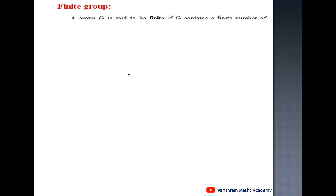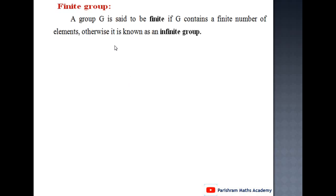Now, first: finite group. Definition of finite group: A group G is said to be a finite group if G contains a finite number of elements; otherwise it is called an infinite group. It means if G contains a finite number of elements then the group is called a finite group. If the number of elements are not finite, then the group is called an infinite group.